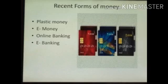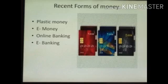Next, e-money. Electronic money is money which exists in banking computer systems and is available for transactions through electronic systems. Online banking, also known as internet banking, is an electronic payment system that enables customers of a bank or other financial institutions to conduct a range of financial transactions through a website. Electronic banking, also known as National Electronic Funds Transfer (NEFT), is simply the use of electronic means to transfer funds directly from one account to another, rather than by cheque or cash.